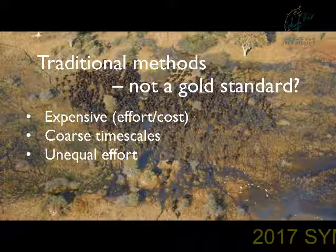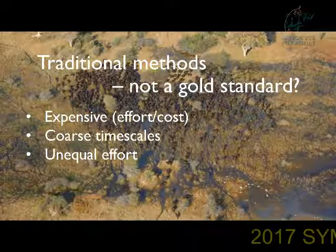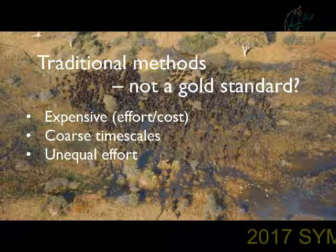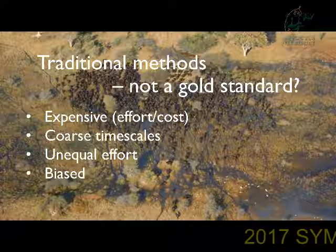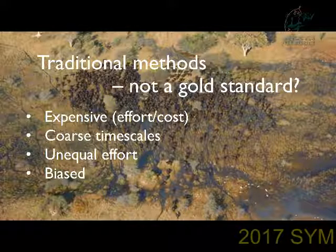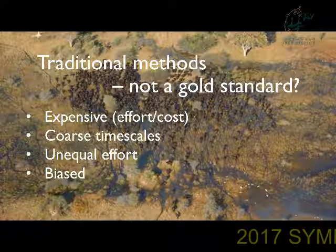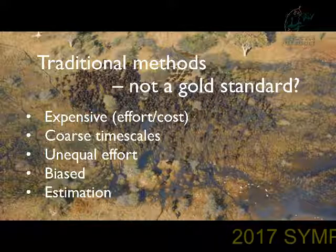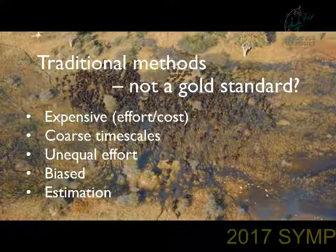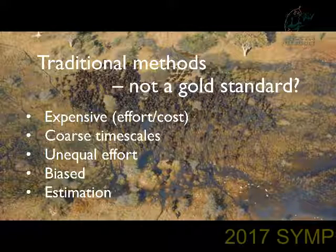Areas that are obscured from the air or difficult to penetrate on the ground might receive less survey effort than other areas, and the same thing goes for times of year that impede visibility. These methods might also not be great for capturing animals that live in dense habitats, for capturing animals that are small, for capturing juvenile animals, or nocturnal species that aren't active during the time of your survey. And to restate the obvious, these estimations are just estimates — they're derived from counts using statistics, and they're not absolute counts of population size.